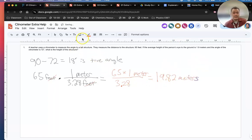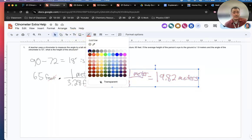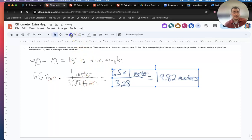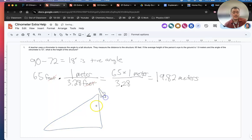So if we were going to draw a triangle of this rocket, it would look like this. This is where the rocket is. That's my rocket. And this is the angle, 18 degrees, and the length here is 19.82.